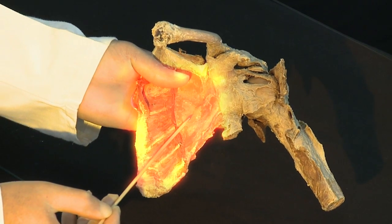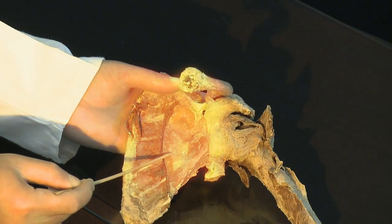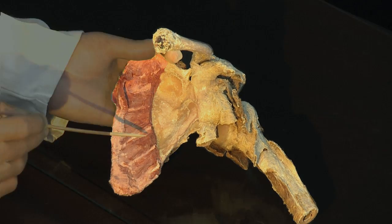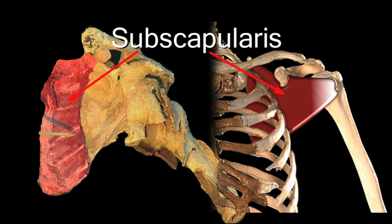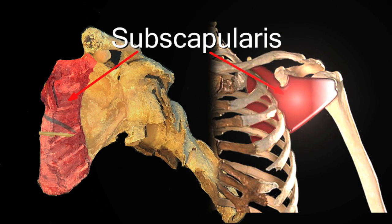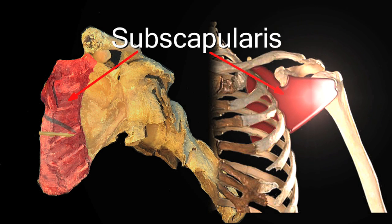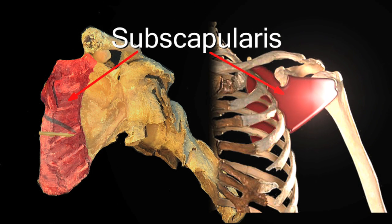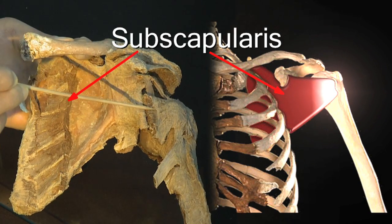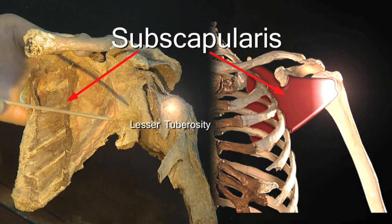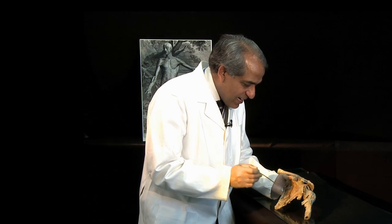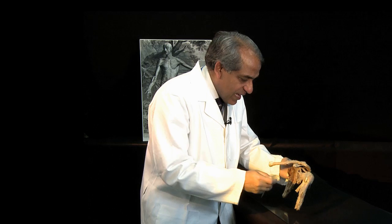Further medially we are on to the anterior surface of the scapula, and coming off from the front of the scapula is this very large, powerful, multi-pennate muscle which is subscapularis. It's been divided here, but subscapularis runs in front of the capsule of the shoulder joint, then blends partially with the capsule, and its tendon attaches to the front of the lesser tuberosity — the anterior rotator cuff muscle.